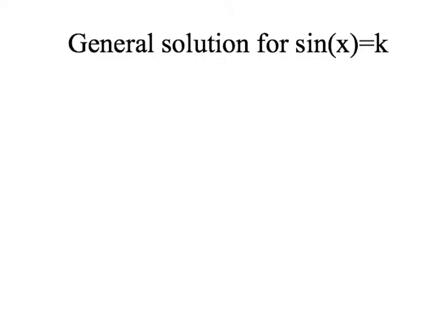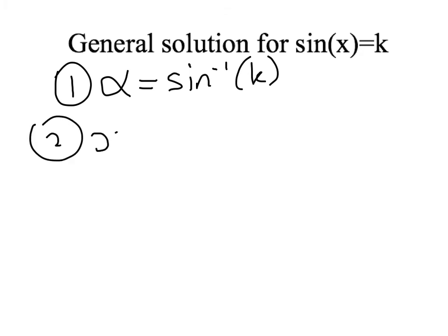Right, the general solution for sine of x equals k, the steps are again as follows. Alpha is my principal solution. Then, all my x solutions come from taking multiples of π and either adding or subtracting the alpha value. Right, so we'll have a look at the unit circle thing again.